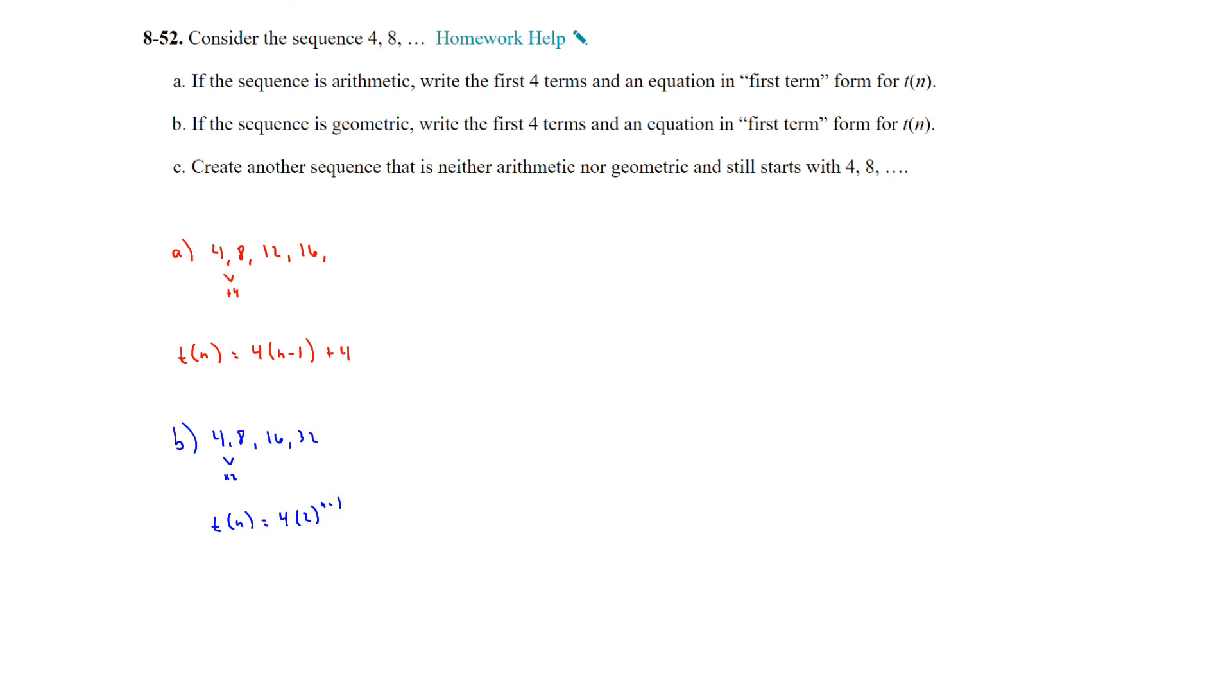Create another sequence that is neither arithmetic nor geometric and still starts with 4, 8. So for an example for C, we could just 4, 8, we could add 4, and then on the next one we could times it by 4. So that would be 32, and then on the next one we could add 4, and then times it by 4. So it would be 144. So the sequence would be 4, 8, 32, 36, 144, and so on. So it's not arithmetic, it's not geometric, but still a sequence.